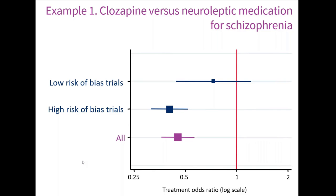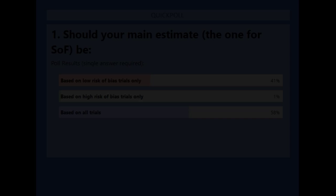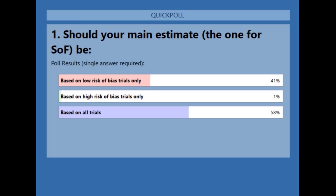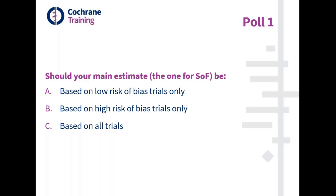Based on the poll: 41% of people voted to base results on low risk of bias trials only, 1% on high risk of bias trials only, and 58% on all trials. I don't really have a correct answer — that's the whole point of these examples. I have another poll and another example.